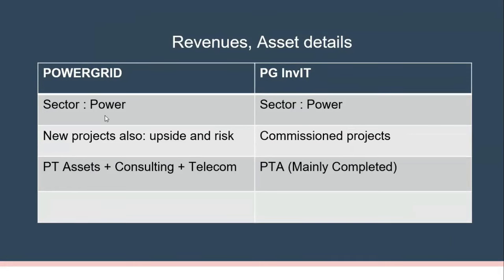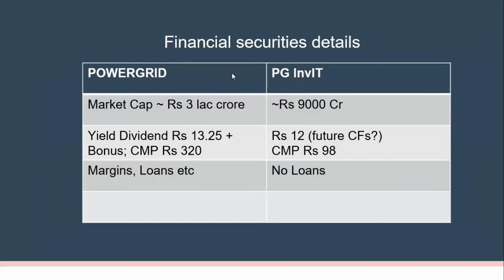Both Power Grid and PG InvIT are in the power sector. However, Power Grid has power transmission assets plus consulting and telecom interests — diverse revenue streams. PG InvIT mainly holds completed power transmission assets. Power Grid can take up new projects, offering upside but also risk, whereas PG InvIT's assets are commissioned, already generating revenues. Power Grid has a massive market cap of approximately ₹3 lakh crore, while PG InvIT has about ₹9,000 crore.